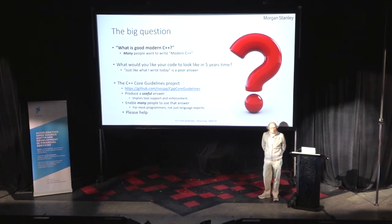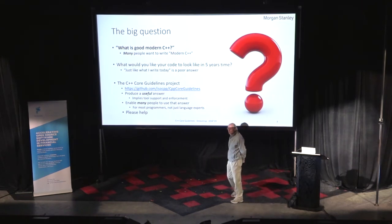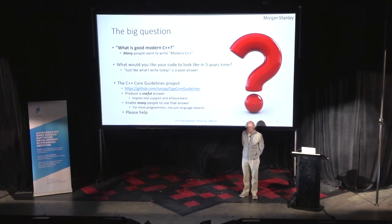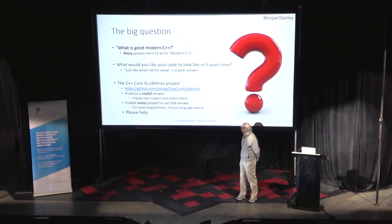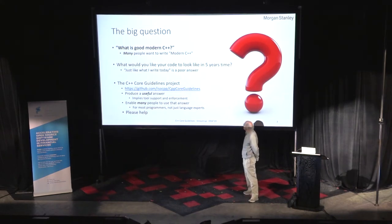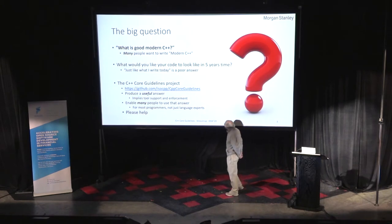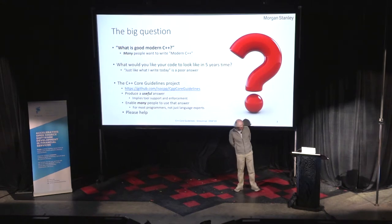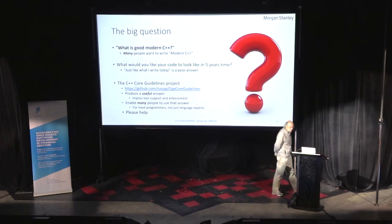I wasn't the only one considering this, so I found several other people involved in projects like that. We made a joint project, and of course to have us all work together it had to be open source. There were people from different and competing organizations. I want a useful answer to this, not a theoretical answer. And you can find it all on GitHub — if you can type in 'C++ Core Guidelines' you can find it.